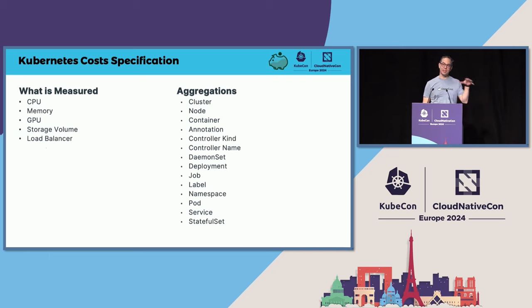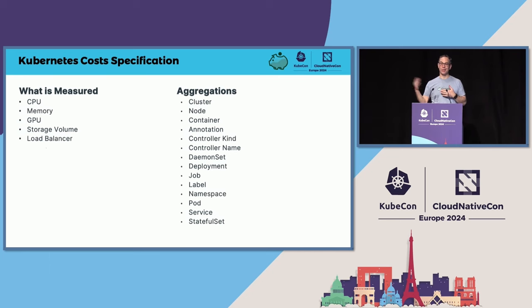The specification talks about how things are shared equally, but it also talks about how to record all these things. And so that's how OpenCost got started, focused strictly on Kubernetes.